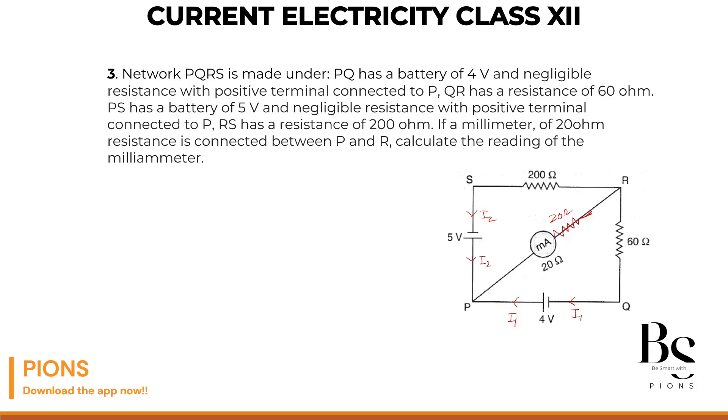So the current entering the junction, the current coming from this side and this side, should be equal to the current leaving the junction. If 2 liters is coming from here and 5 liters are coming from here, what is the water going to this pipe? 2 plus 5 which is 7. So I1 plus I2 will be the current going across PR.